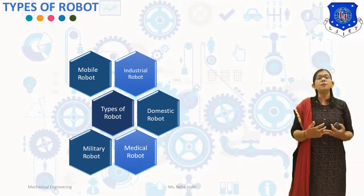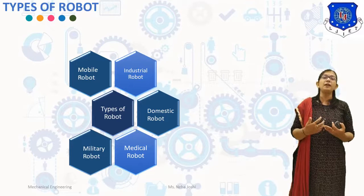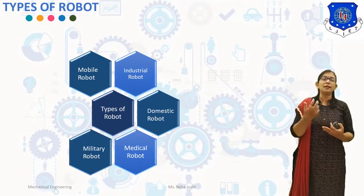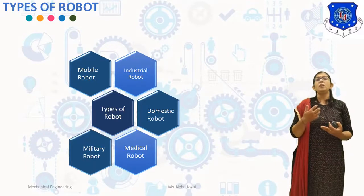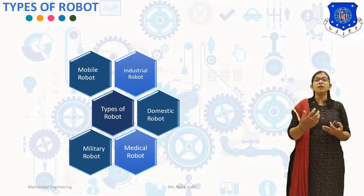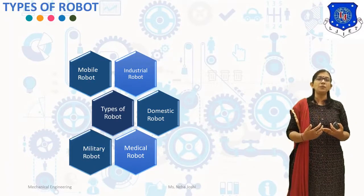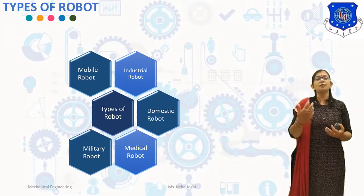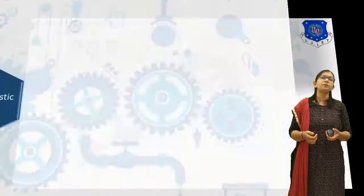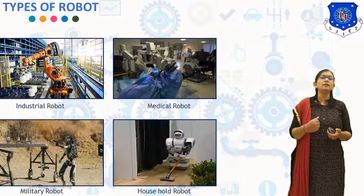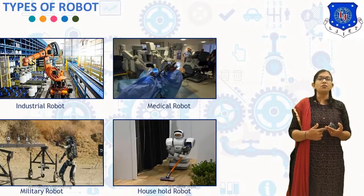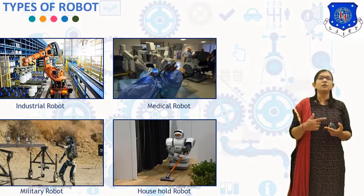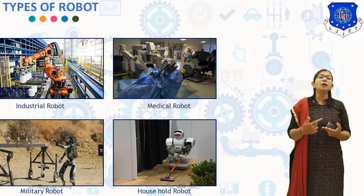Medical robots are used in medicine and medical institutions, like surgery robots. Military robots are used in the military for purposes such as bomb disposal robots, transportation robots, and drones. Here you can see different kinds of medical robots, industrial robots, military robots, and domestic robots which are used today.